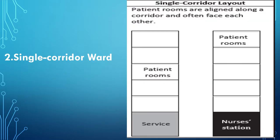The second type is the single corridor ward. Patient rooms are aligned along a corridor and often face each other. On one side there are different patient support services and on the opposite side is the nurse station.